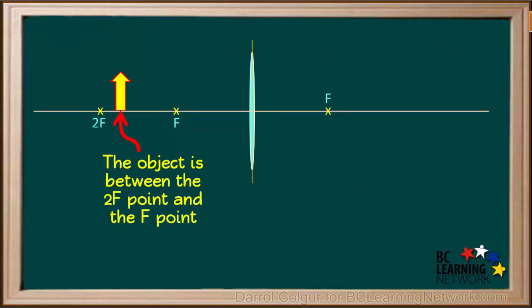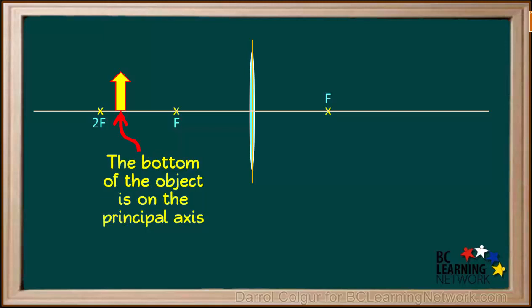Here is a diagram showing the location of the object between the 2F point and the F point. We'll use a yellow arrow for the object. Notice the bottom of the object is sitting on the principal axis.